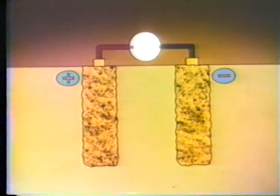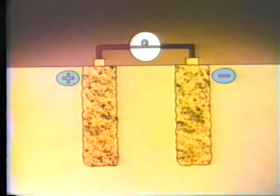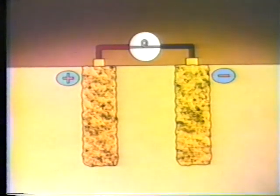Since the sulfuric acid electrolyte is the source of the sulfate, the electrolyte gradually becomes watered down. When the cell is completely discharged, both plates are pure lead sulfate, and the electrolyte is mostly water with only a small amount of sulfuric acid in solution. In this condition, the cell is no longer capable of supplying electricity — its stored chemical energy is used up.